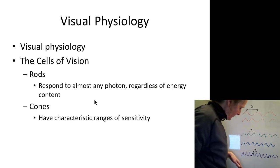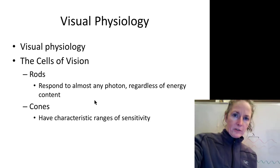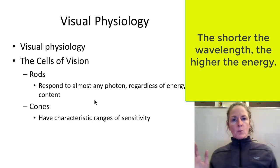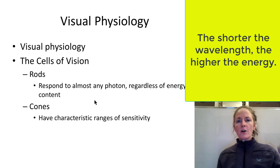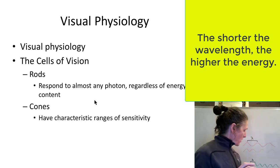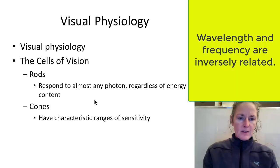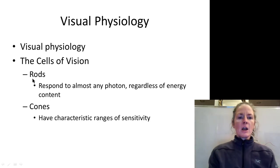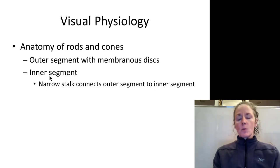The shorter the wavelength, the more cycles we can have in one second. Light all travels at the same speed regardless of its wavelength. So light with a longer wavelength will have fewer cycles per second — a lower frequency — than shorter wavelength light, where we can get many more cycles per second. Rods will respond to just about any wavelength that we can see.